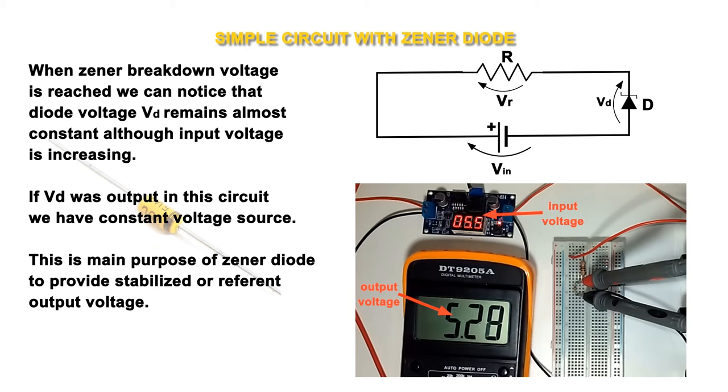we can notice that diode voltage VD remains almost constant although input voltage is increasing. If VD was output in this circuit, we have constant voltage source. This is main purpose of zener diode: to provide stabilized or reference output voltage.